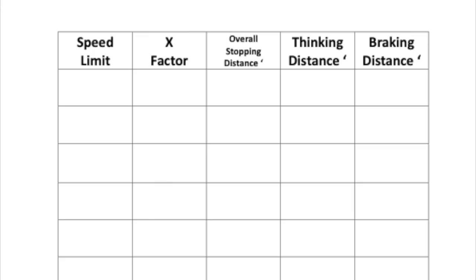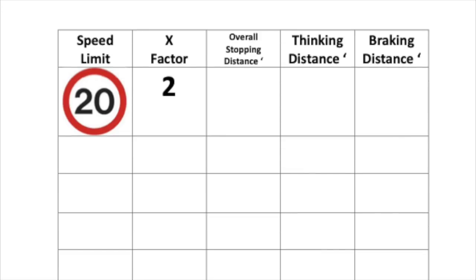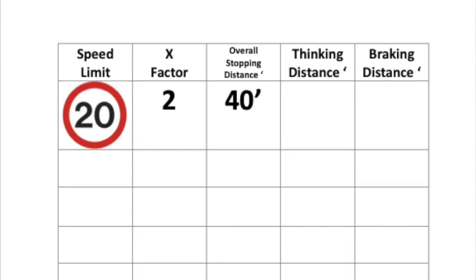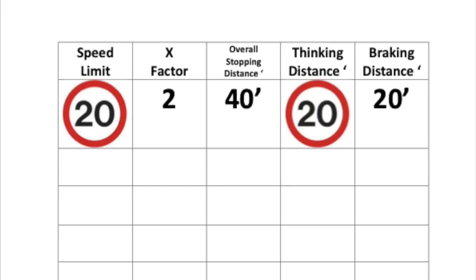Okay, so let's start with the lower speed limit you'll find on British roads: 20 miles per hour. We multiply this by 2, giving us an overall stopping distance of 40 feet. The thinking distance is always equal to the speed limit, so in this case it's 20 feet. So 40 feet minus 20 feet equals a braking distance of 20 feet. So far so good.